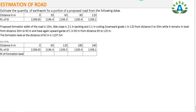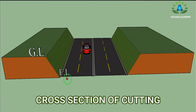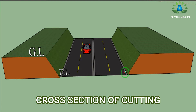Today we are going to do the estimation of the road. For this, firstly we need to understand about the cutting and the filling of the road. This is our cross-section of the cut — we have our ground level in this portion whereas we have the formation level in this portion. If the ground level is at a higher level than the formation level, then it is called the cut. This is the road and this is the width of the road.